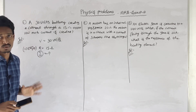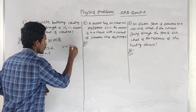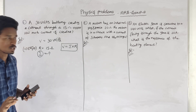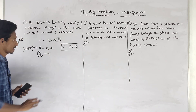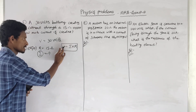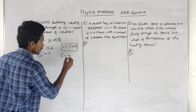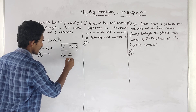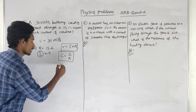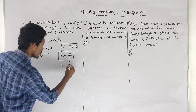We have a formula in the physical combination. V is equal to I into R. We solve this problem. We have potential difference V, and we find current I. The formula is I is equal to V by R.